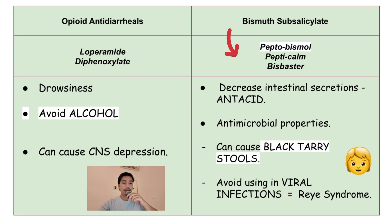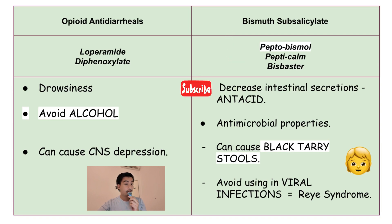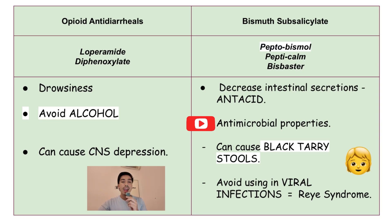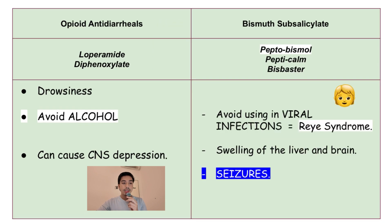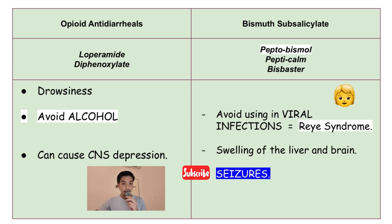For bismuth subsalicylate, examples of these drugs are Pepto-Bismol, Pepticam, and Bisbacter. The mode of action is to decrease intestinal secretions, just like antacids. Bismuth subsalicylate also has antimicrobial properties. As nurses, we have to watch out for black tarry stools or melena, and avoid using it for children with viral infections because it can cause Reye's syndrome. Reye's syndrome is the swelling of the brain and the liver, which can cause increased ammonia in the body, leading to swelling of the liver and brain, which can lead to seizures.